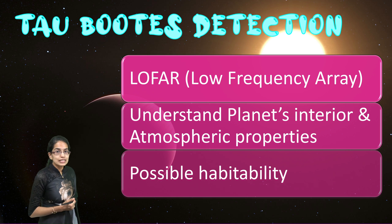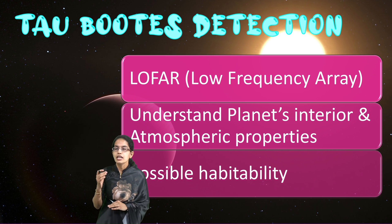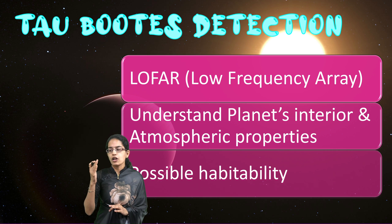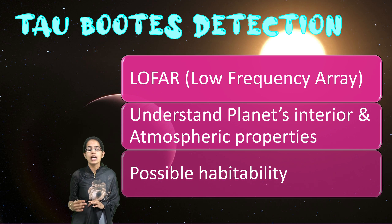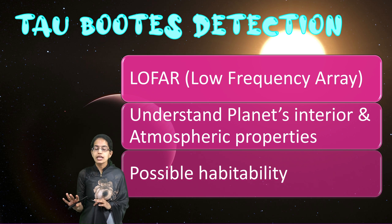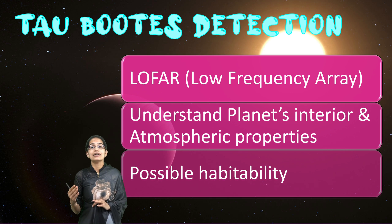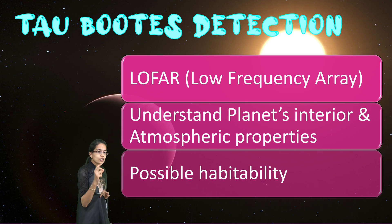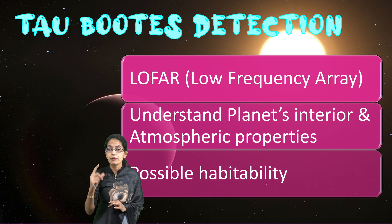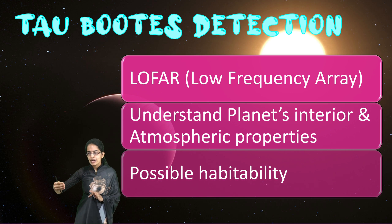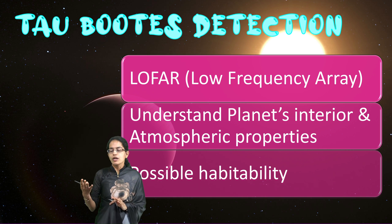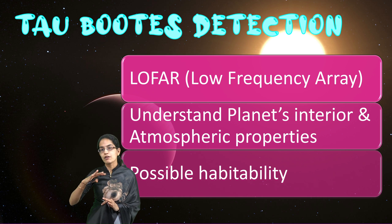Tau Boötis was discovered through LOFAR — the Low Frequency Array — a large radio telescope network deployed in the Netherlands. Professor Turner along with Professor Jaywardhan discovered three such exoplanets: Tau Boötis, Upsilon Andromedae, and 55 Cancri. These three have been discovered where the planet's interior and atmospheric properties are very similar to Earth. Because of the magnetic field similar to Earth's in these exoplanets, there has been a possibility of habitability, as they have the capability to shield their atmosphere from solar winds and cosmic rays.